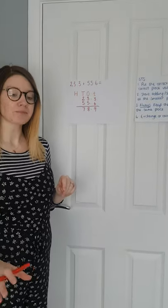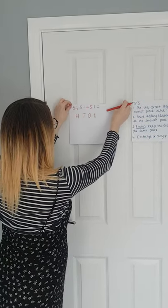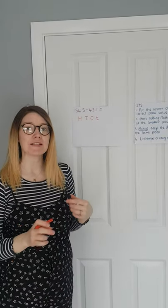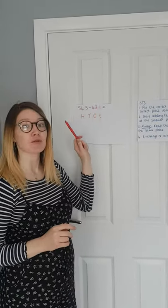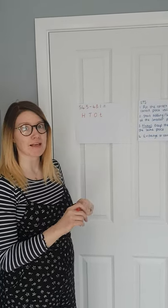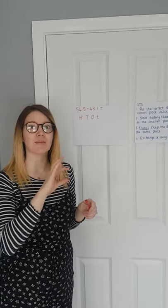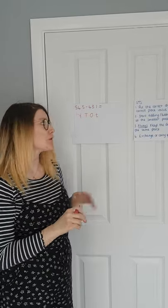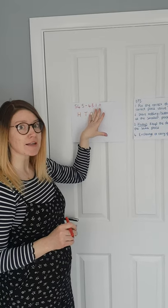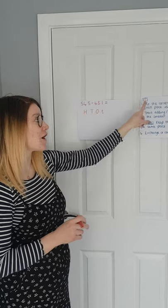Now I'm going to do a subtraction. Our subtraction equation is set out exactly the same again, but remember with a subtraction you always need to take away the second number from the first number — you take away the smallest number from the biggest number. You can't mix them around like an addition, where you can swap the numbers around and add them in any order. With a subtraction, you need to make sure that your smallest number is subtracted from your biggest number, so we need to put our biggest number down first.